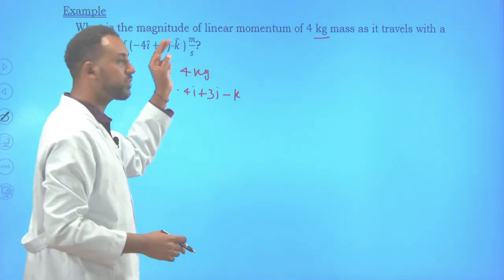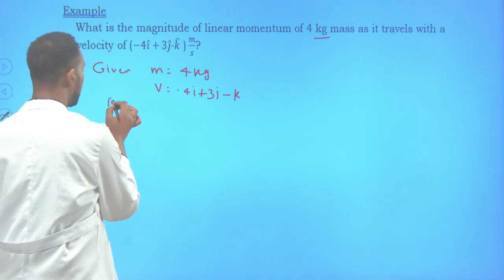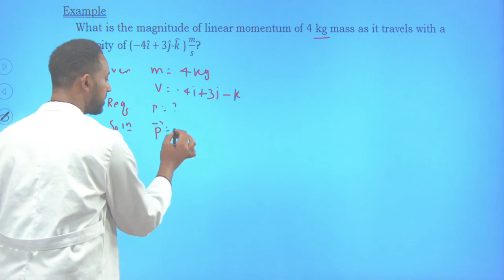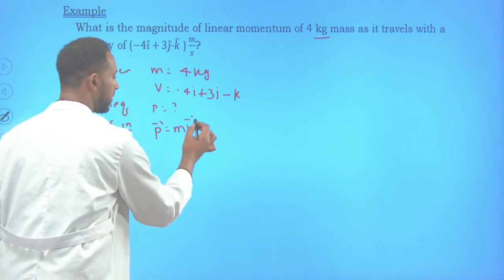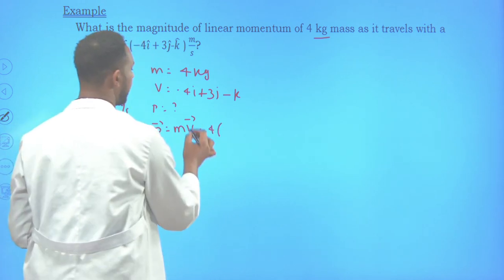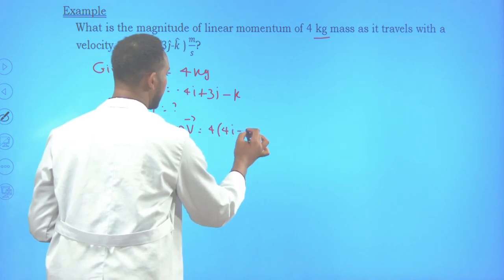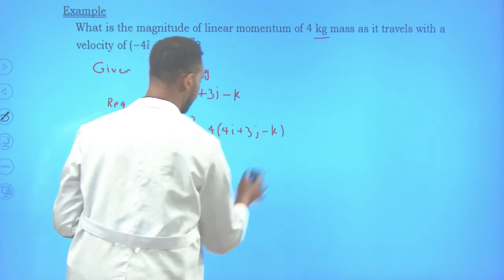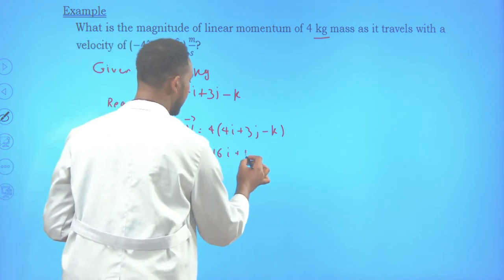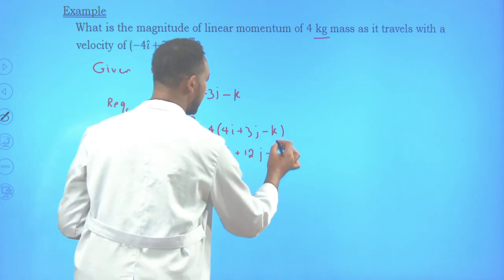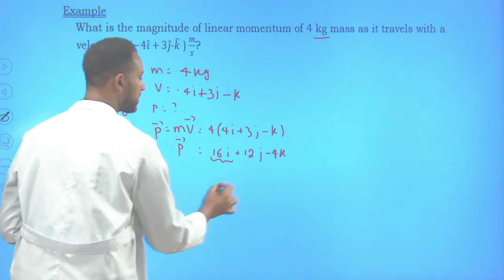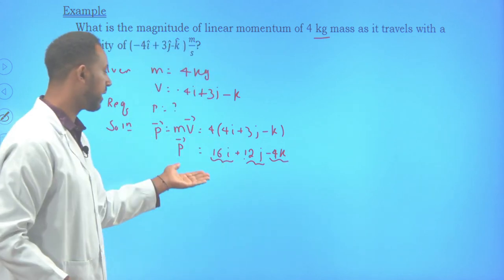We are asked to find the magnitude of the linear momentum. To find momentum p, since momentum is mass times velocity, we multiply the scalar mass by the velocity vector. p equals 4 kilograms times (negative 4i plus 3j minus k). This gives: 4 times negative 4 equals negative 16i; 4 times 3 equals 12j; and 4 times negative 1 equals negative 4k. So the momentum vector is negative 16i plus 12j minus 4k. These are the components of momentum along the x, y, and z directions.